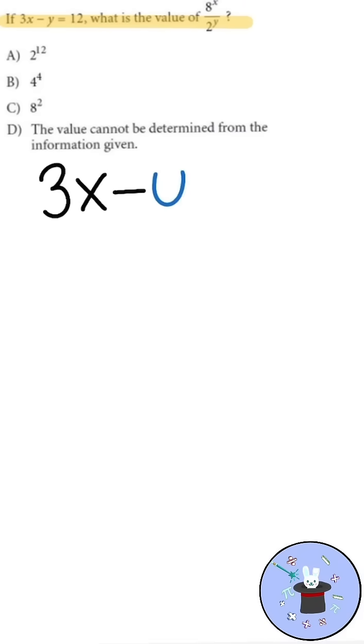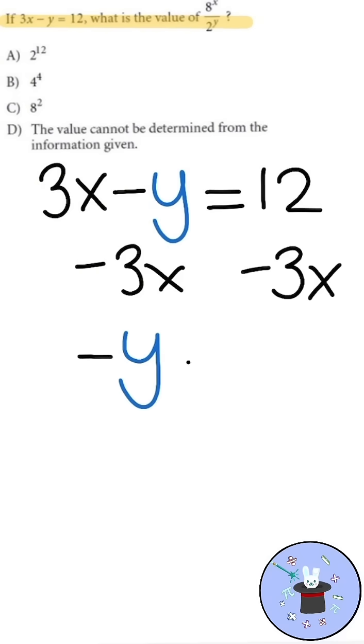Let's write the first part of the problem here, 3x minus y equals 12. We want to try to isolate y, so we'll subtract 3x on both sides. We get negative y equals 12 minus 3x.